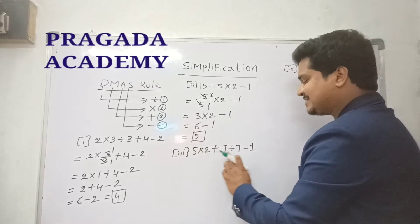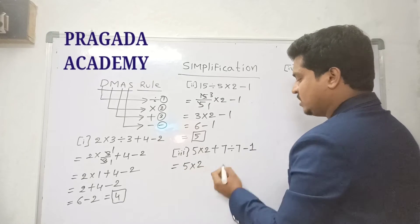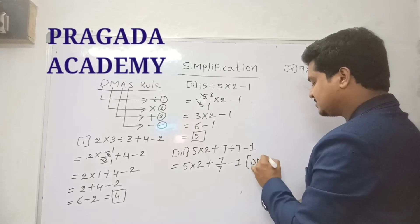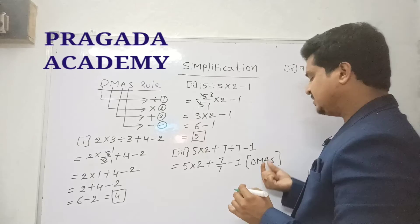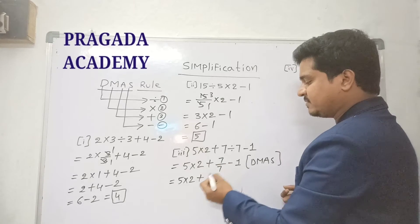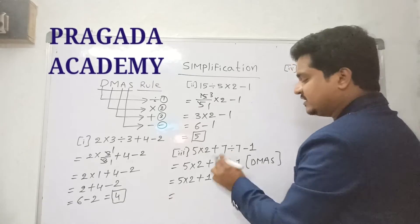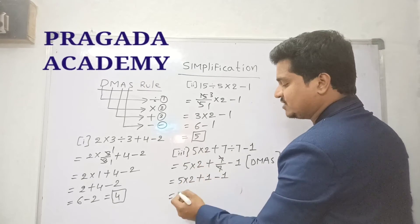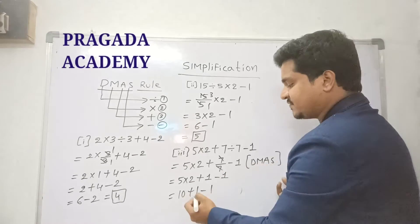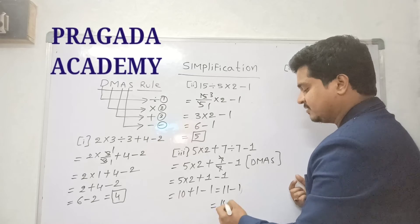Third problem: 5 × 2 + 7 ÷ 7 − 1. Apply DMAS rule: first division. 7 ÷ 7 = 1 (numerator and denominator are the same). So we have 5 × 2 + 1 − 1. After division, do multiplication: 5 × 2 = 10. Then addition: 10 + 1 = 11. Last, subtraction: 11 − 1 = 10. The answer is 10.